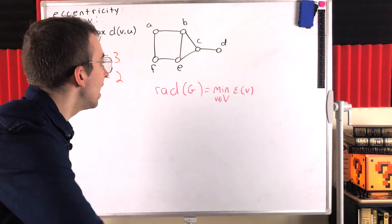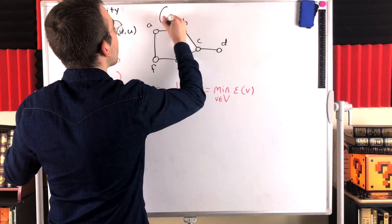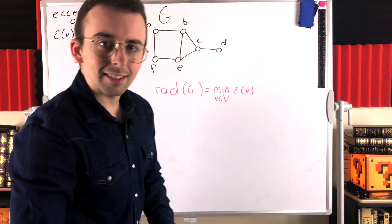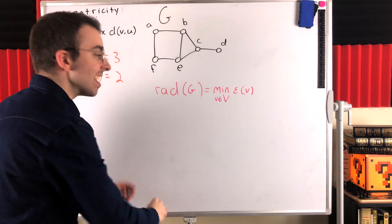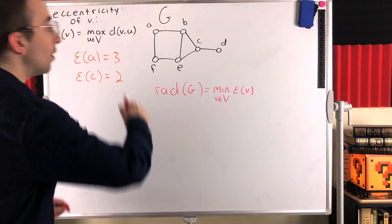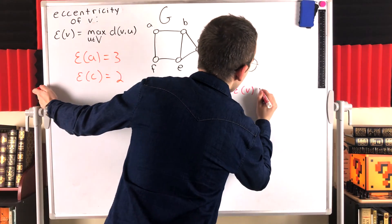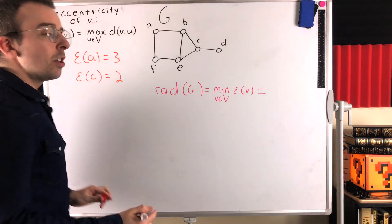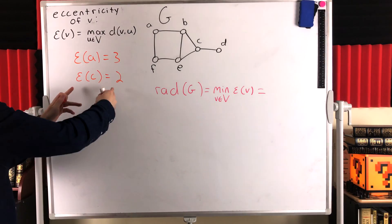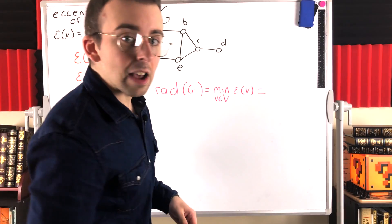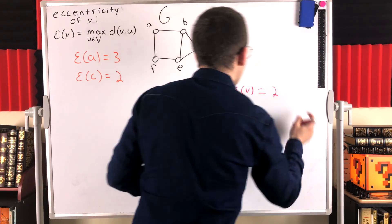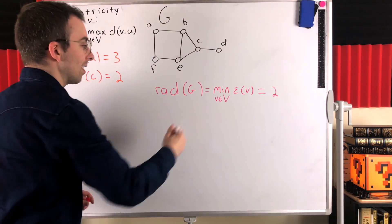If we say that our graph here is called g, what is the radius of g? Well, that's the minimum eccentricity of the graph. If you looked at all the individual eccentricities of these vertices, you'd find that they never get lower than two. And since at least one of them does have an eccentricity of two, the minimum eccentricity is two, and that is the radius of the graph.